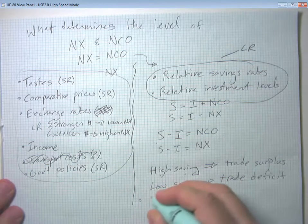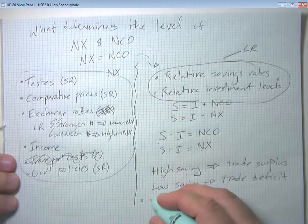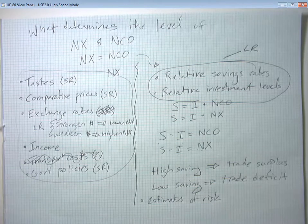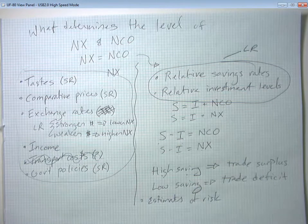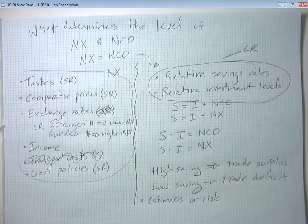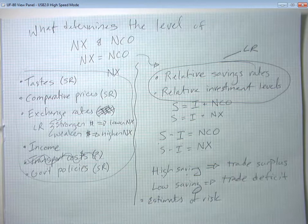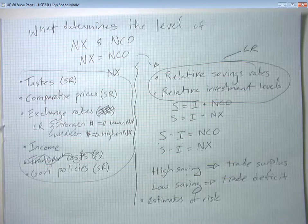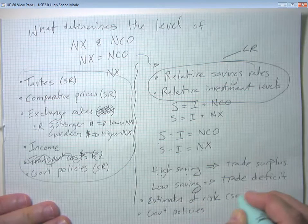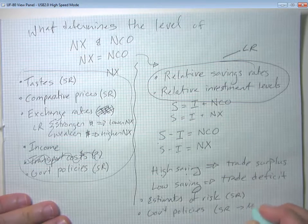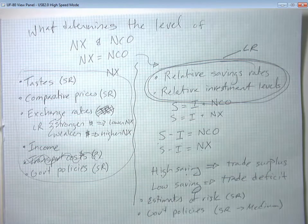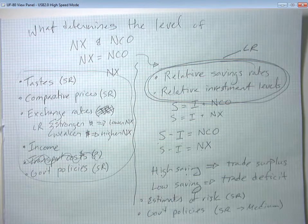In the shorter run, we are going to go ahead and see that things like estimates of risk impact relative capital flows. So that if a country looks like it's going through a period where it might leave the euro or it might have its government overthrown or something like that, then people are going to stop wanting to invest in that country. And in fact, many of the people who live in that country are going to try and move their money out of it. We could also have various government policies that could restrict capital inflows and that kind of stuff. This one almost always tends to be short run. This one can sort of be short to medium run in its effect. But really, fundamentally, almost everything we think about net capital outflows and net exports comes back to this idea of relative savings rates, relative investment levels.